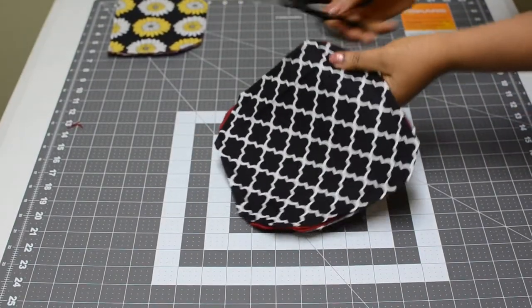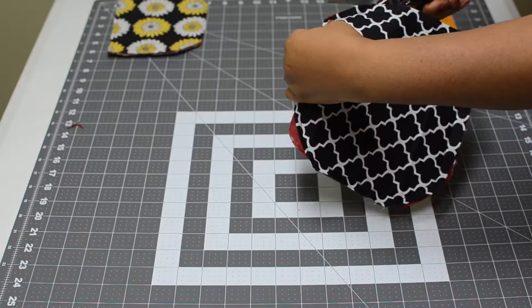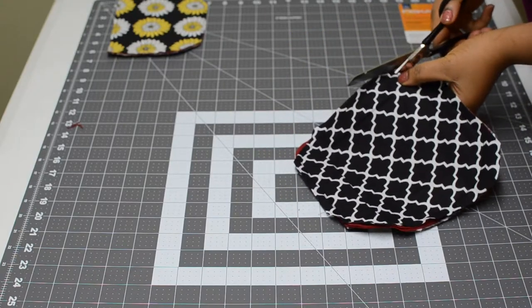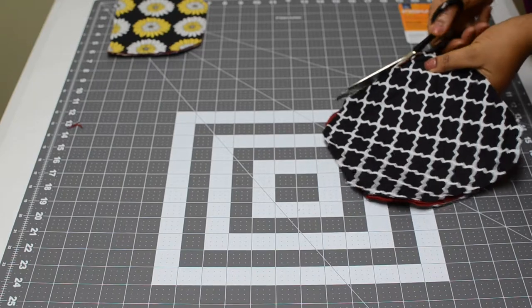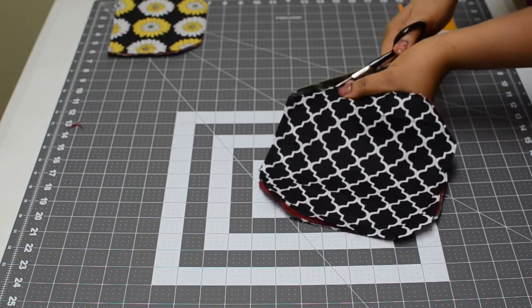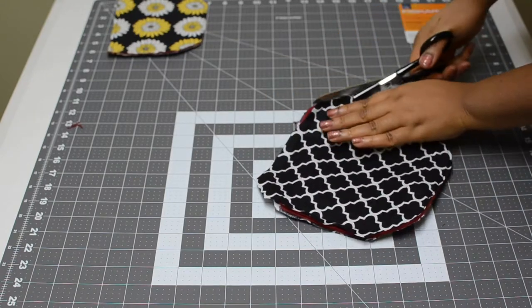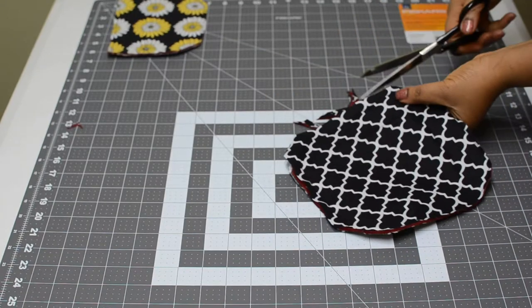When you're done, trim it down into a quarter of an inch, just like we did with the other layer fabric earlier in the tutorial. Make sure you're watching your line so it doesn't go all the way into the stitches that you made.